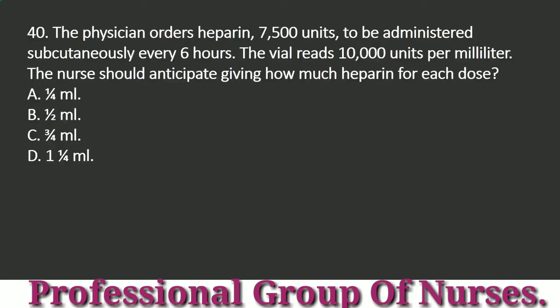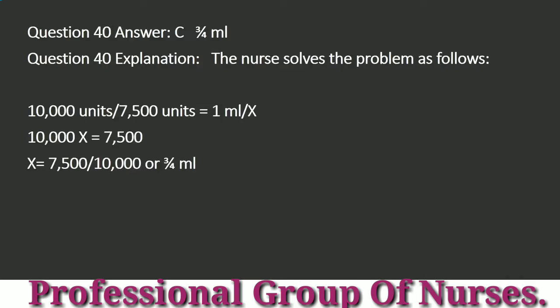Question 40: The physician orders heparin 7,500 units to be administered subcutaneously every 6 hours. The vial reads 10,000 units per milliliter. The nurse should anticipate giving how much heparin for each dose? a. One-fourth milliliter. b. One-half milliliter. c. Three-fourths milliliter. d. One-and-one-fourth milliliter. Answer: c. Three-fourths milliliter. Explanation: 10,000 units / 7,500 units = 1 mL / x; 10,000x = 7,500; x = 7,500/10,000 = three-fourths milliliter.